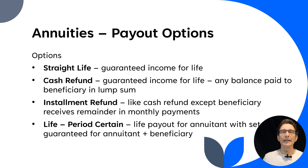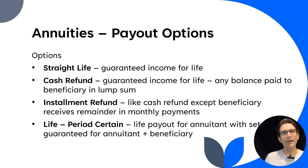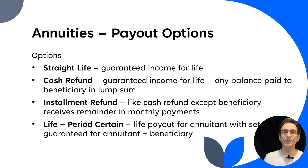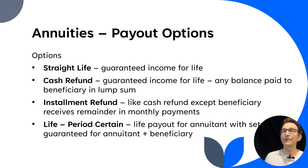Cash refund is another option — guaranteed income for life, and any balance is paid to the beneficiary in a lump sum. That's one of those survivor benefits. You have guaranteed income for life, and if there's any leftover value based on how long you lived, it will be paid out in a lump sum to your named beneficiary. Installment refund is similar to cash refund, except instead of a lump sum payout, the beneficiary receives the remainder in monthly payments — they become like the new annuitants, receiving monthly payments.